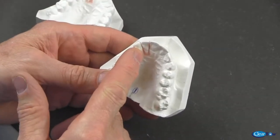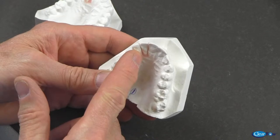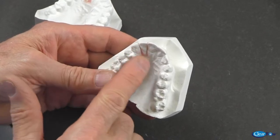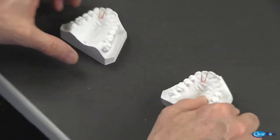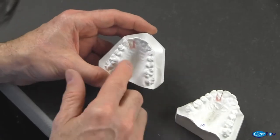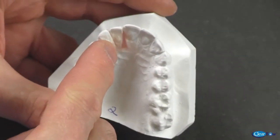On model number one, the upper right lateral tooth has been cut and waxed back into its original position. On model number two, the same lateral tooth has been cut and rotated mesial lingually.